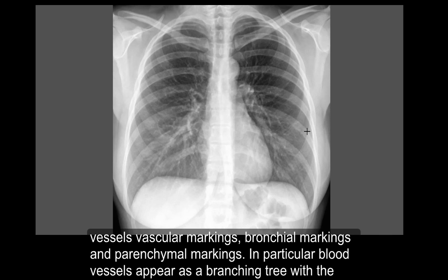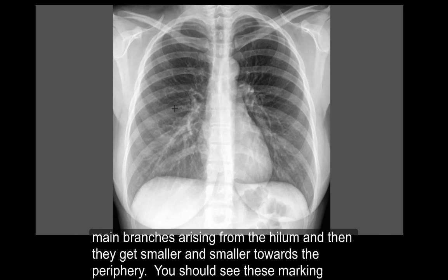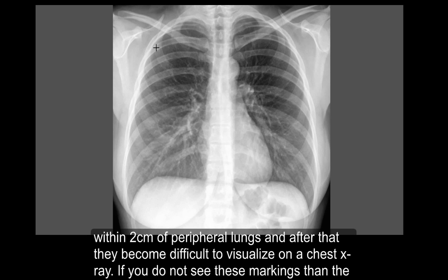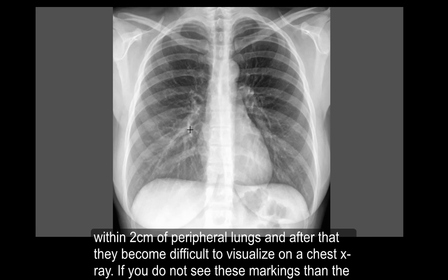In particular, blood vessels appear as a branching tree, with the main branches arising from the hilum and then getting smaller and smaller towards the periphery. You should see these markings within two centimeters of the peripheral lungs, and after that they become difficult to visualize on a chest X-ray. If you don't see these markings, then the X-ray is not normal.